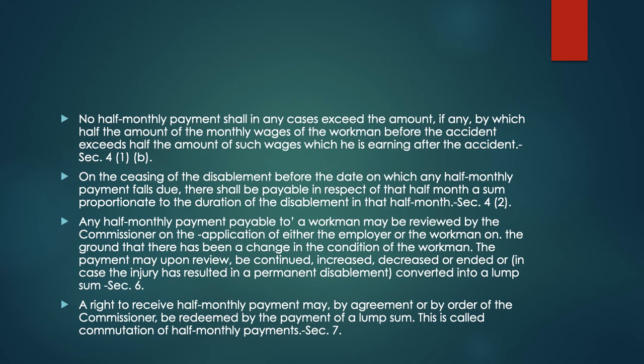Any half monthly payment may be reviewed by the Commissioner on the application of either the employer or the workman on the ground that there has been a change in the condition of the workman. Upon review, the payment may be continued, increased, decreased, or ended, or in case the injury has resulted in permanent disablement, converted into a lump sum — this is mentioned under Section 6. A right to receive half monthly payment may by agreement or by order of the Commissioner be redeemed by the payment of a lump sum; this is called commutation of half monthly payment, mentioned under Section 7.